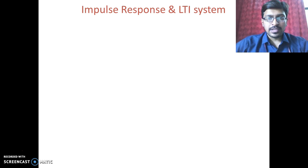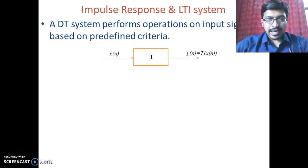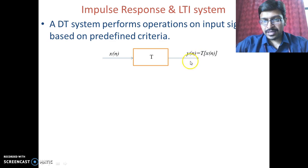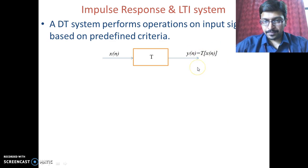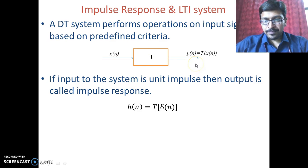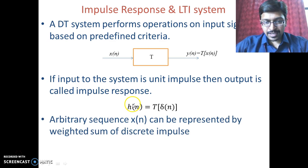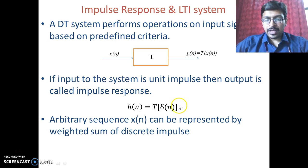Now we will see the relation between impulse response and an LTI system. Any discrete-time system has input x(n) and output y(n), where mathematically y(n) = T{x(n)}. If the input to the system is a unit impulse sequence delta(n), then the output is called the impulse response h(n). So h(n) is the impulse response and delta(n) is the input, meaning h(n) = T{δ(n)}.